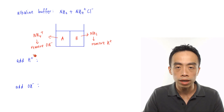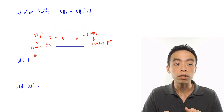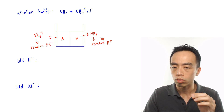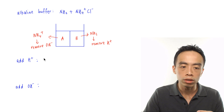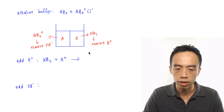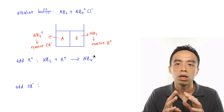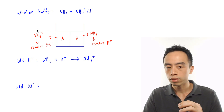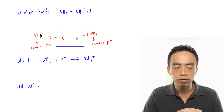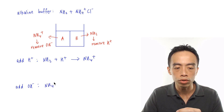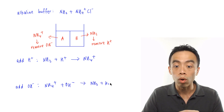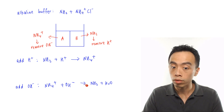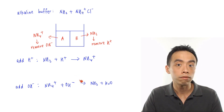If H+ is added to the alkaline buffer, ammonia (NH3) removes it: NH3 + H+ → NH4+ (full arrow, all H+ removed, pH maintained). If OH- is added, NH4+ reacts with it: NH4+ + OH- → NH3 + H2O (full arrow, all OH- removed, pH maintained).